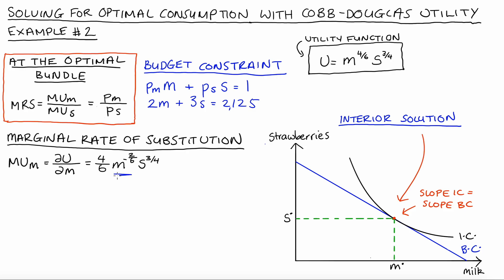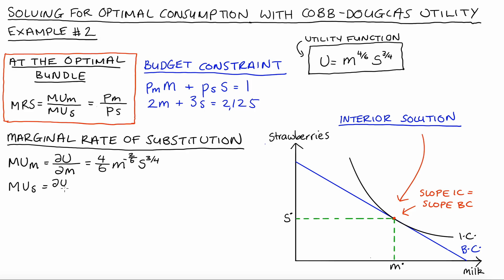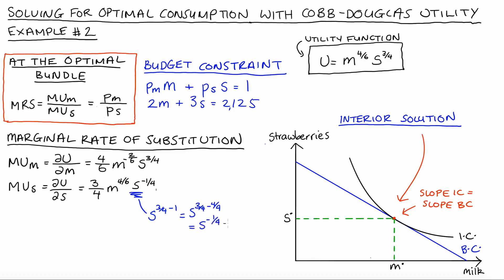When we take 1 away from the exponent on m, we get negative 2 over 6 because 1 can be written as 6 over 6, so 4 minus 6 is negative 2 over 6. Next, the marginal utility of strawberries equals the partial derivative of the utility function with respect to s. Treating m as a constant, the 3 quarters comes out the front, and s is raised to 3 quarters minus 1, which is negative a quarter — since 1 equals 4 over 4, so 3 minus 4 is negative 1 over 4.